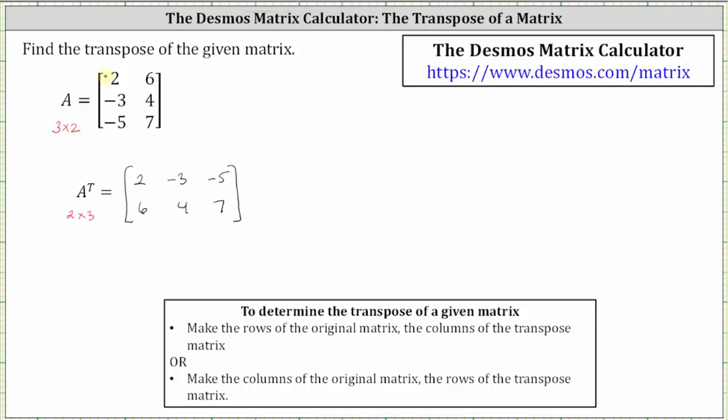So looking at matrix A, notice column one becomes row one in A transpose, and column two in matrix A becomes row two in A transpose.